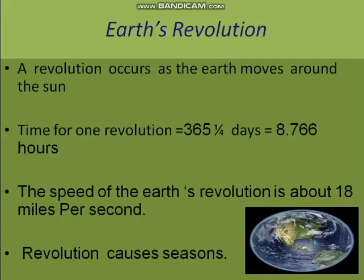According to our calendar, we get only 365 days per year. But every year there is a quarter day remaining. After four years, those quarter days make one full day, giving us 366 days — called a leap year. The year 2020 is one such leap year. In a leap year, February has 29 days.